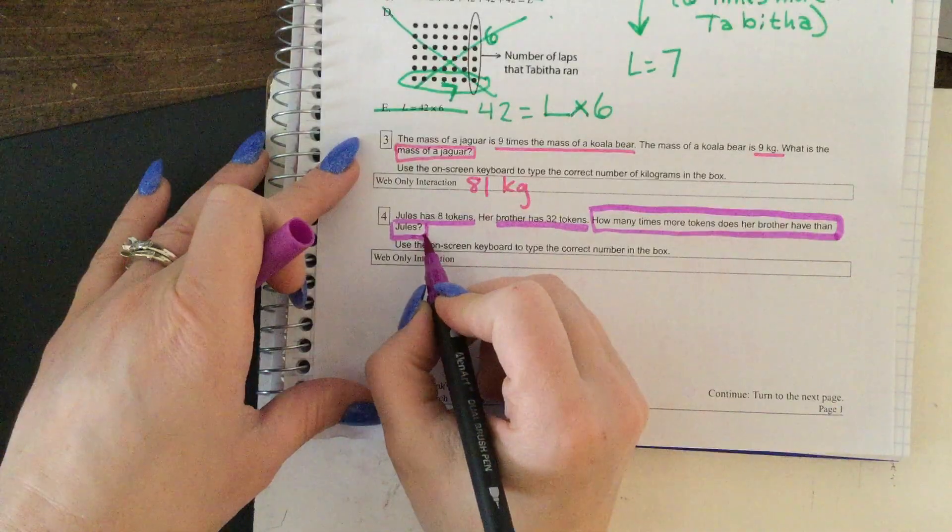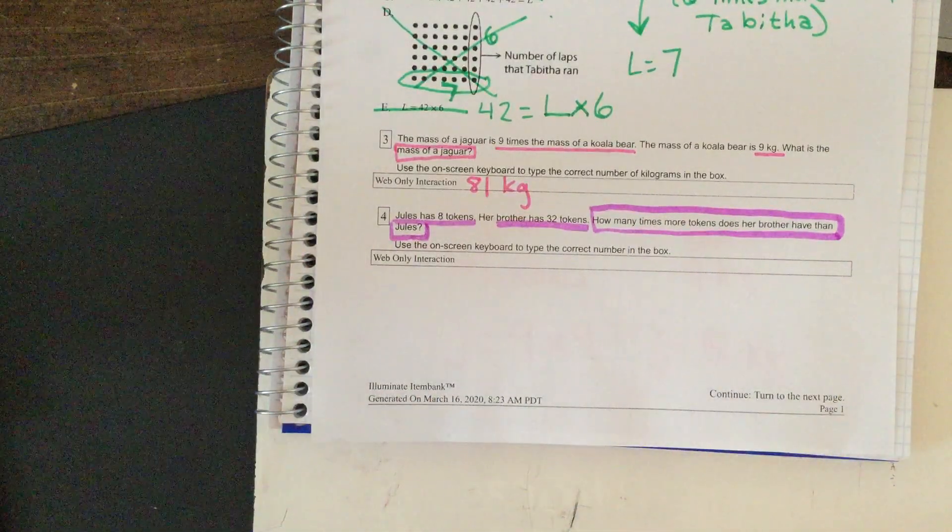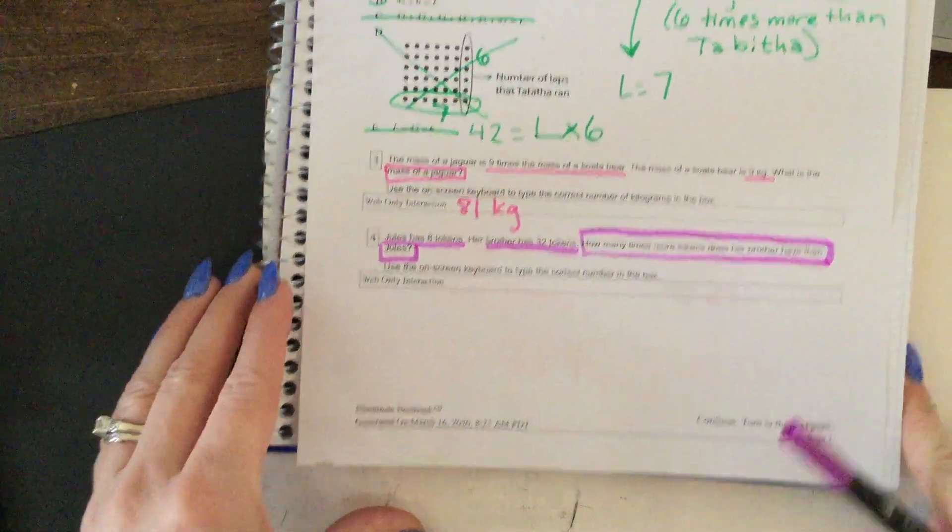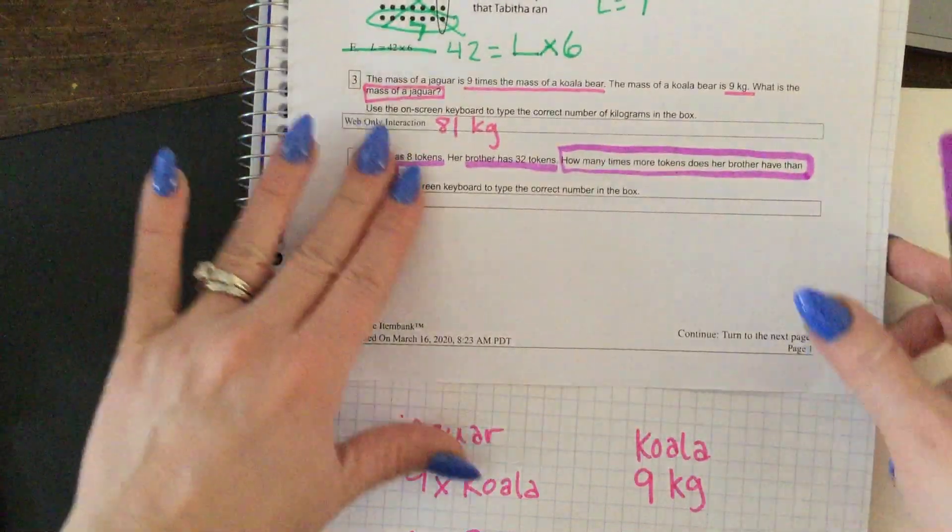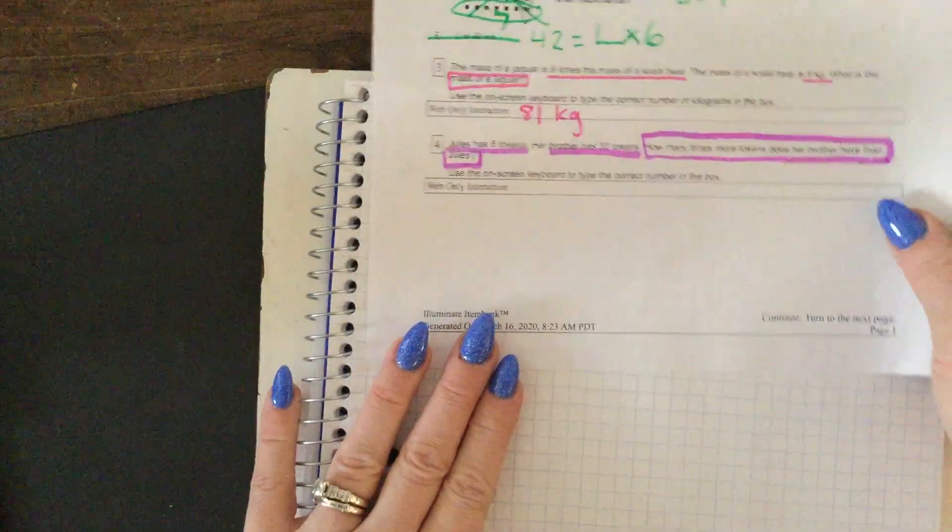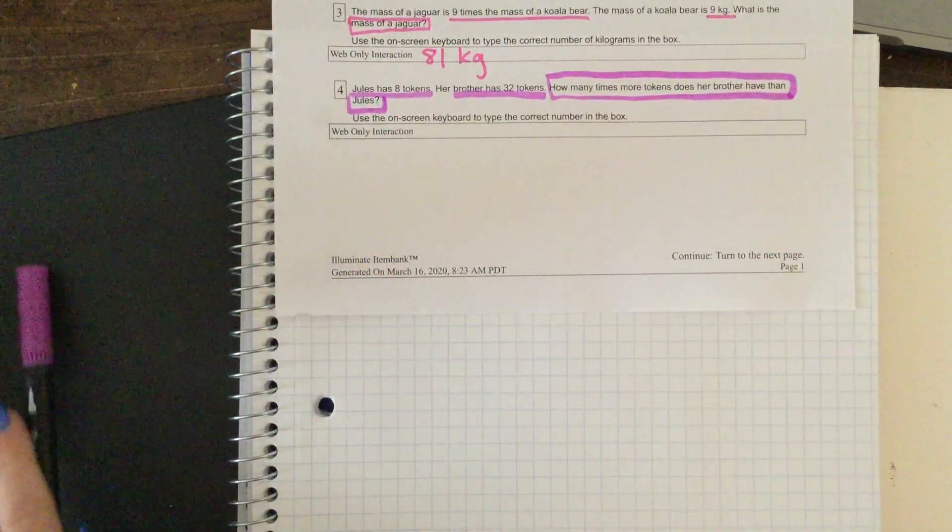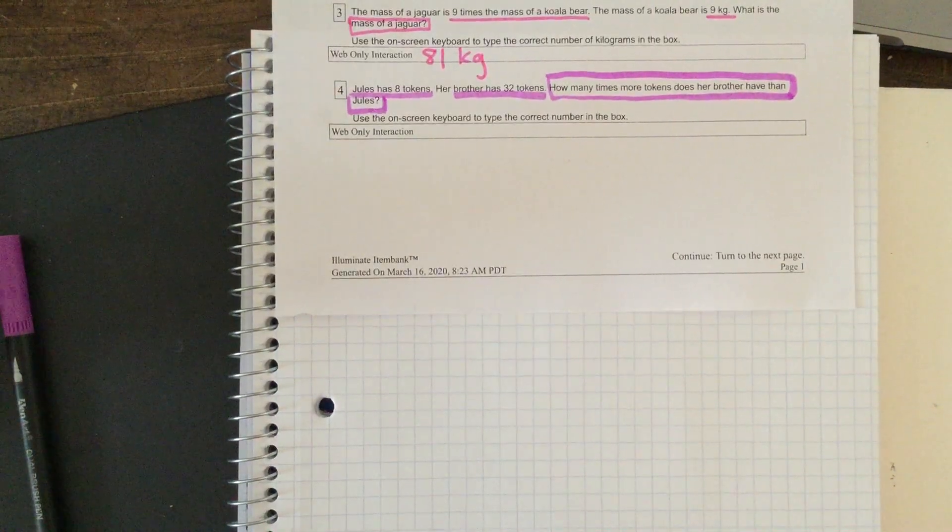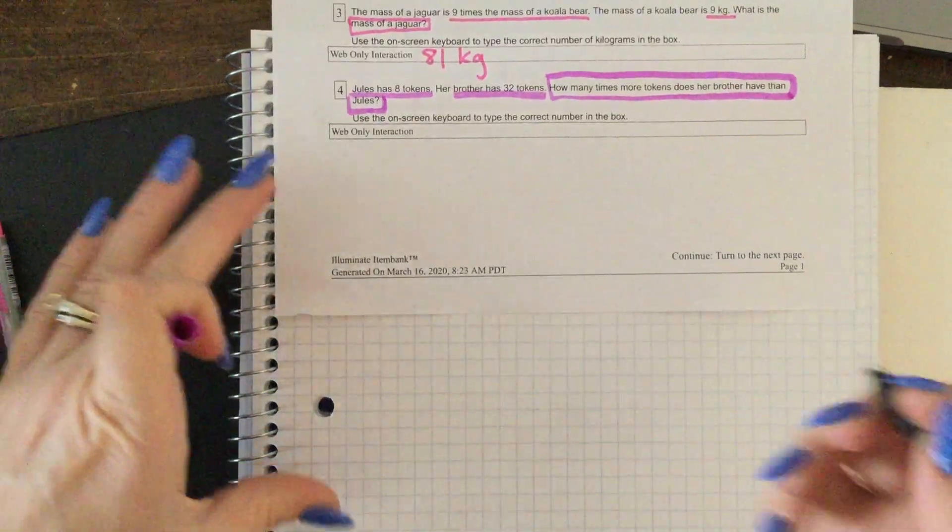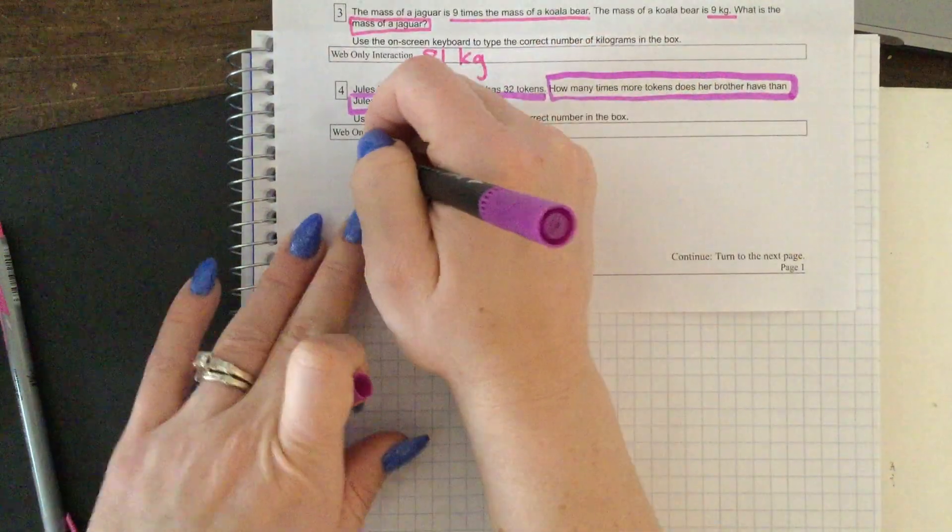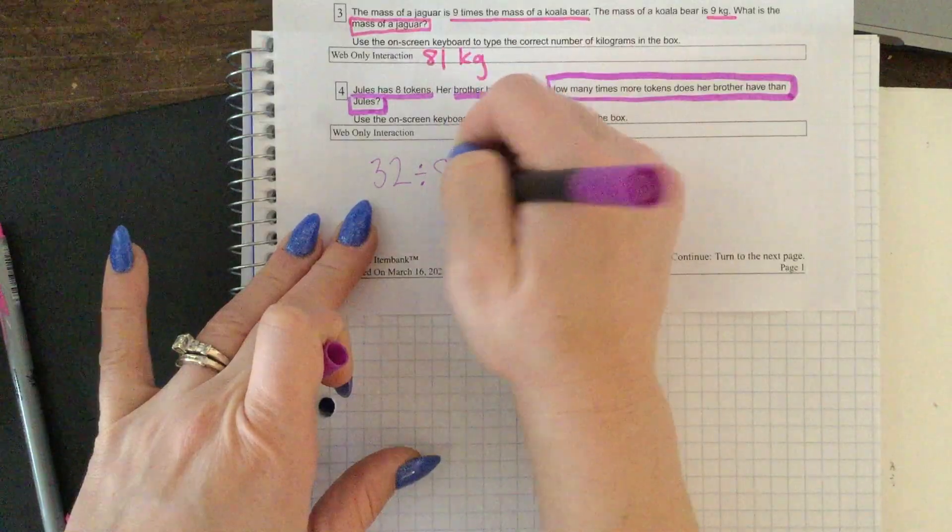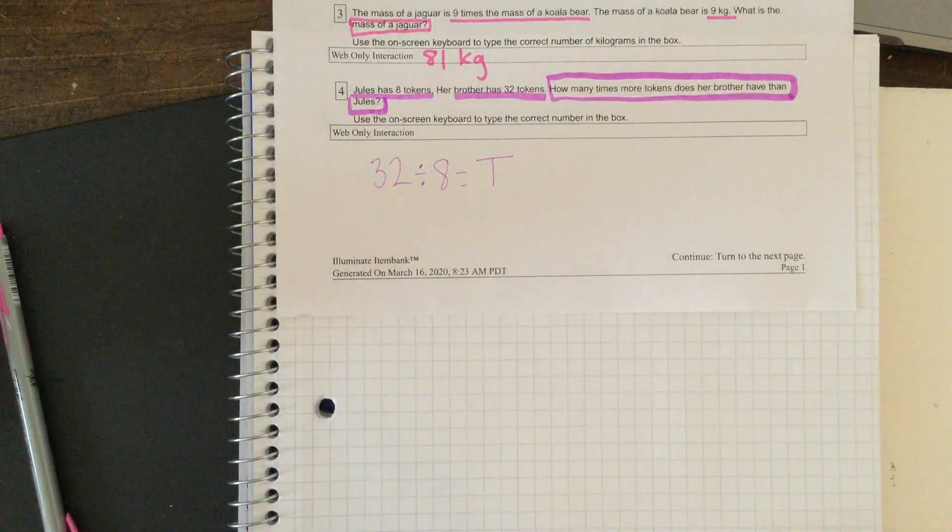If you were typing this in, you would type it into the on-screen keyboard, but we are gonna write it down. So let's think about what we know. We know that Jules has eight tokens, her brother has 32 tokens. How many times more tokens does her brother have than Jules? So we can say 32 divided by 8 equals T for tokens.